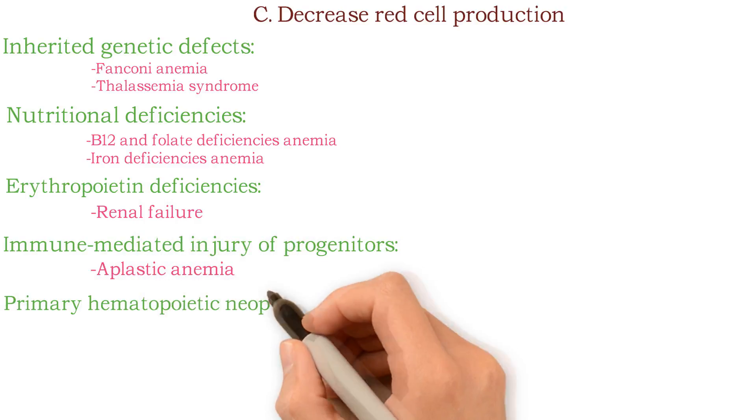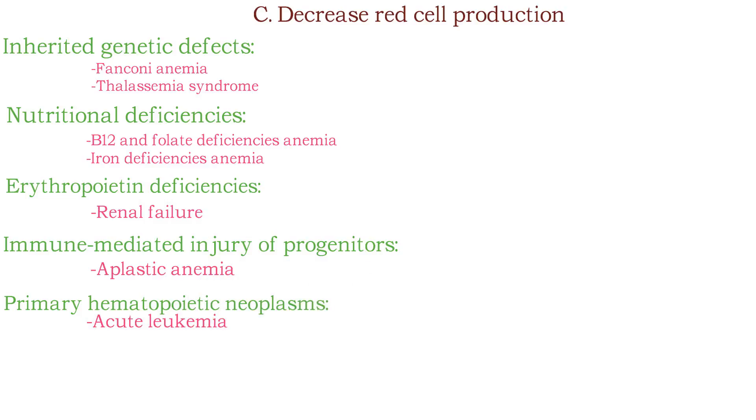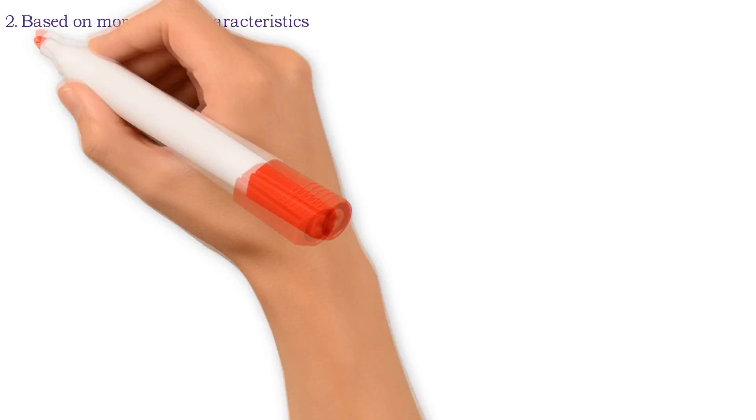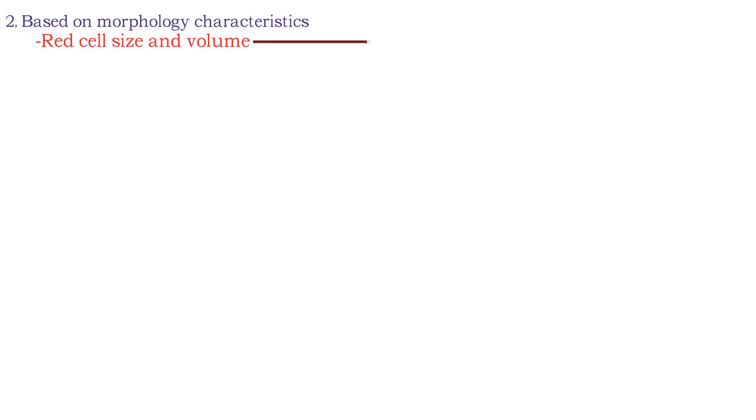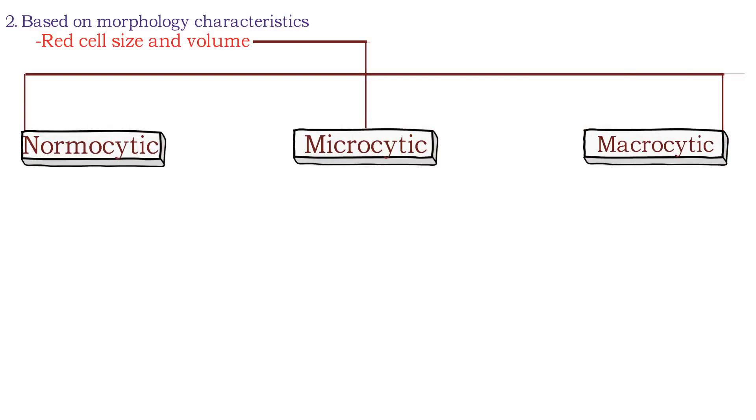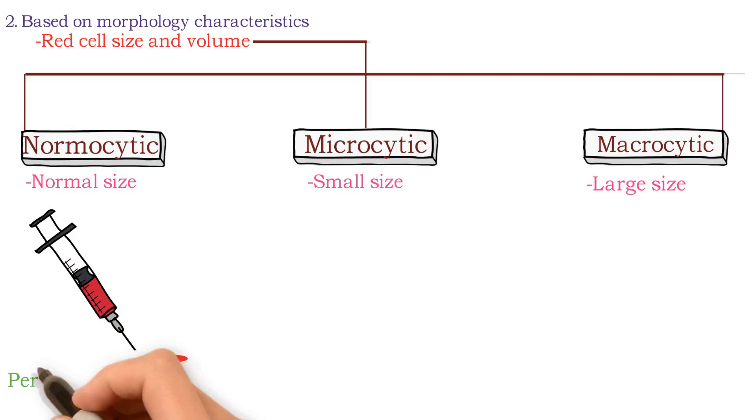Primary hematopoietic neoplasms like acute leukemia, infection of red cell progenitors like parvovirus B19 infections. Next, based on morphology characteristics, red cell size and volume: normocytic, microcytic, macrocytic. Normocytic means normal size, microcytic means small size, macrocytic means large size.